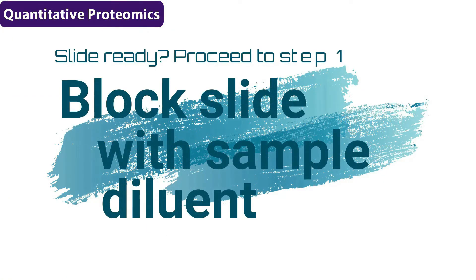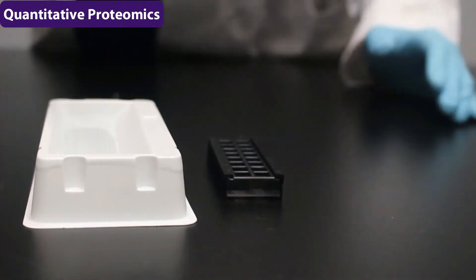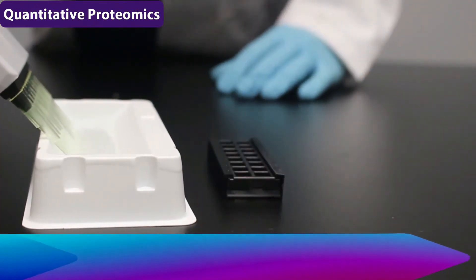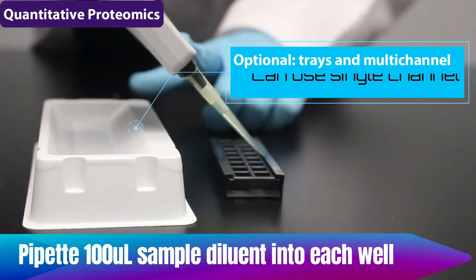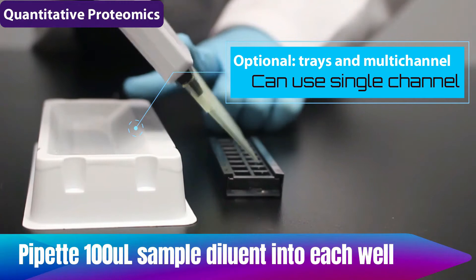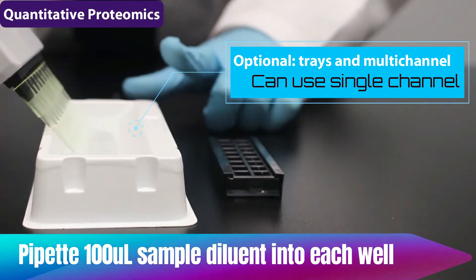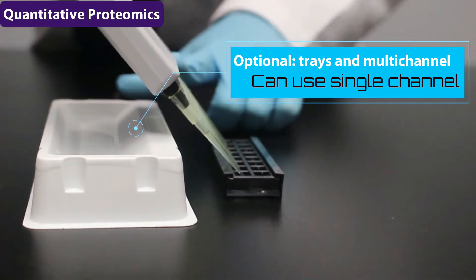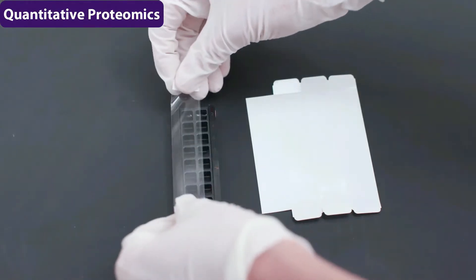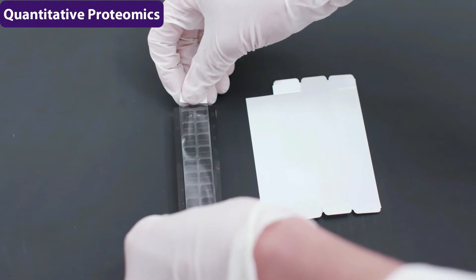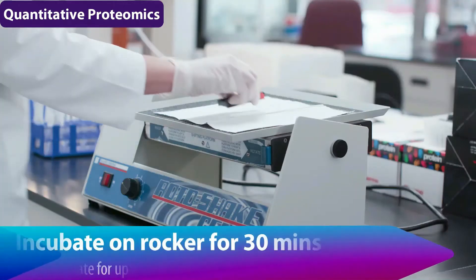If your slide is ready, you are ready to proceed to step one. Block slide with sample diluent. Every place on that slide that does not have an antibody is going to be blocked with this diluent, and that's going to prevent external contamination. Using a multi-channel, pipette 100 microliters of sample diluent into each well. Cover with adhesive film and incubate on the rocker for 30 minutes. Now this can incubate for up to two hours.